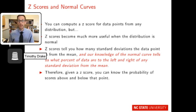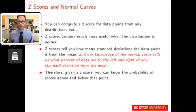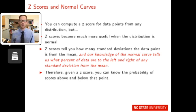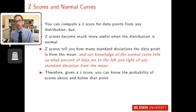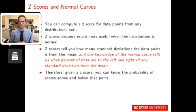We can compute a z-score from any distribution, but z-scores are much more useful when the distribution is normal. Z-scores tell us how many standard deviations a data point is from the mean, and knowing the properties of normal curves, we can determine what percent of the data lie to the left and right of that data point. Given a z-score, you can know the probability that scores fall above or below that point — which we'll connect to probability later in the lecture.